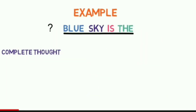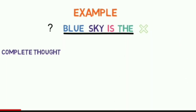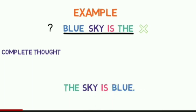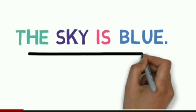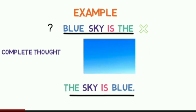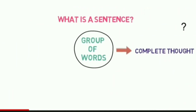Now, rearranging the same words we can get a meaningful sentence: 'The sky is blue.' Now we get to know about the color of the sky from the sentence. As it is conveying meaning, it's a sentence.